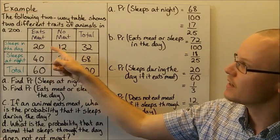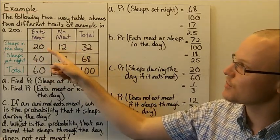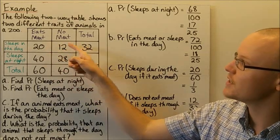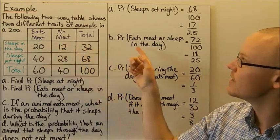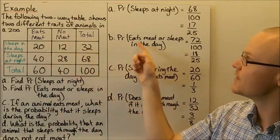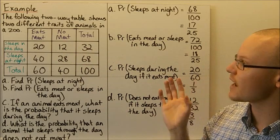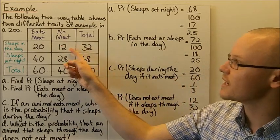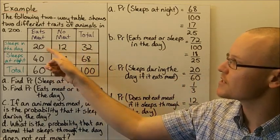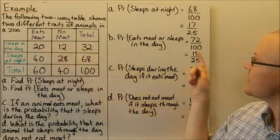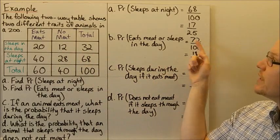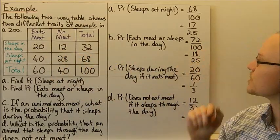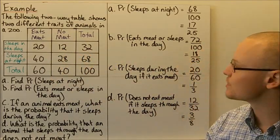So there are three categories that fit the event — an animal eats meat or it sleeps during the day. Adding those three values gives 72, so the probability is 72 out of 100, which is 18 over 25.